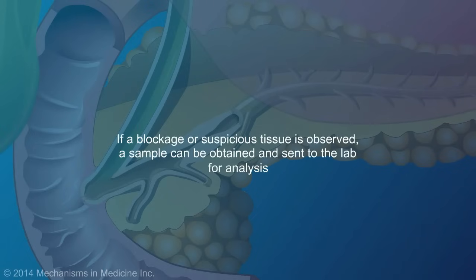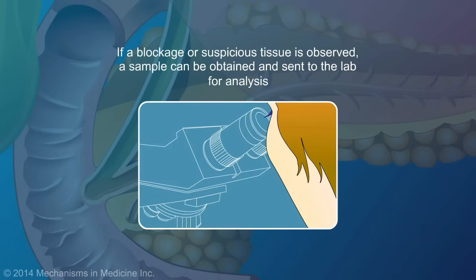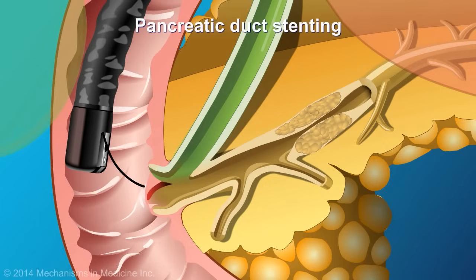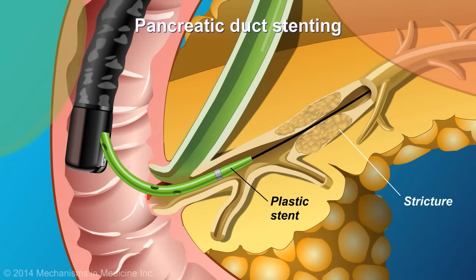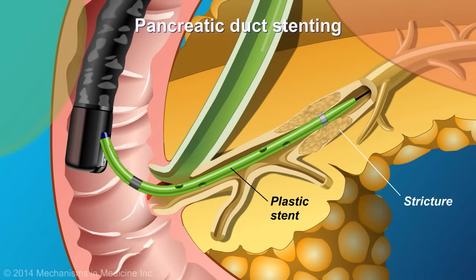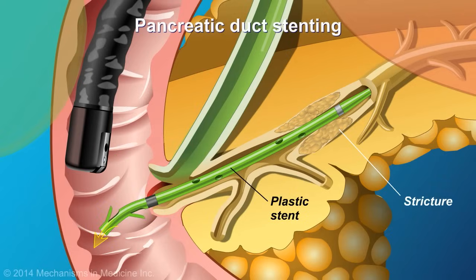If a blockage or suspicious tissue is observed, a sample can be obtained and sent to the lab for analysis. In the pancreatic duct, when fluid collection, stones or strictures are present, a plastic stent can be inserted to bypass the obstruction or to drain the fluid. Once the obstruction is bypassed, the normal flow can be re-established.